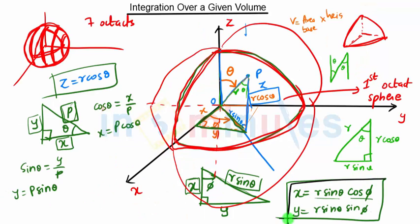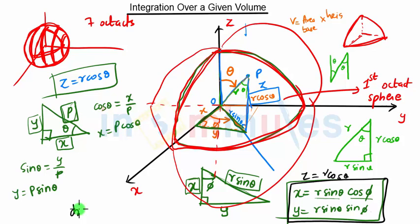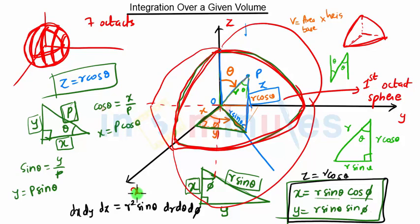These are the basic substitutions to follow when a sphere is given in the problem: z = r·cosθ. We also have the volume element dx·dy·dz, which in spherical coordinates becomes r²·sinθ dr dθ dφ. This is also a key substitution. This will be clearer when we see problems on this, which we will cover in our next video — so stay tuned for future lectures.